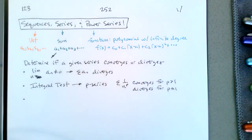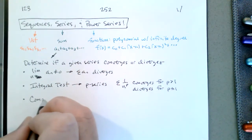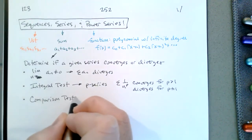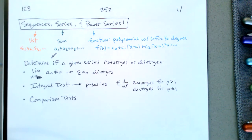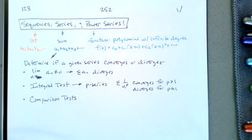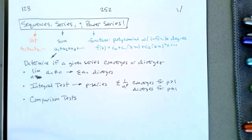So even though p-series seem very limited — it's a very small class of series — it is useful in the comparison tests. This is where we start to quantify what we mean when one series behaves like another series. The comparison tests make great use of p-series. For example, if we have something like (n² + 1) over (n⁴ − 5), we don't care about the plus 1 and minus 5; we care about n² over n⁴, which gives us 1 over n², and that converges.